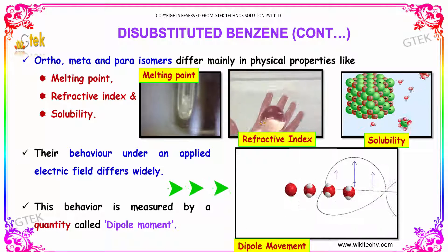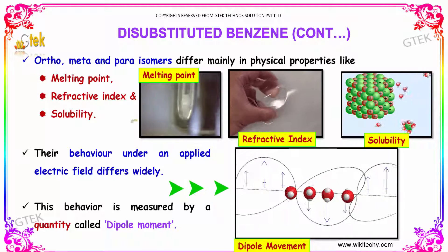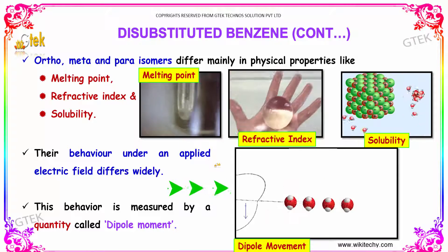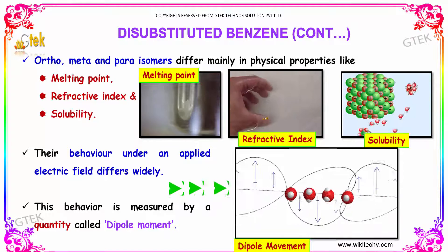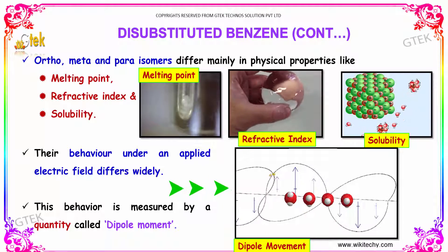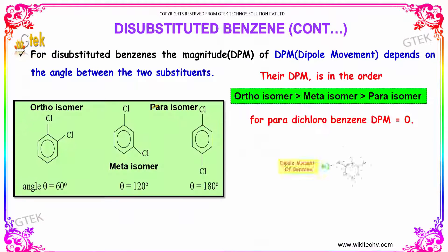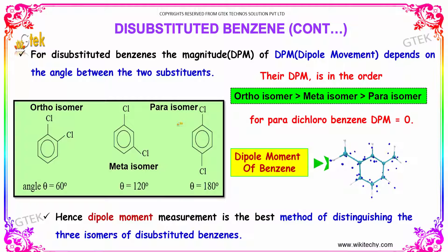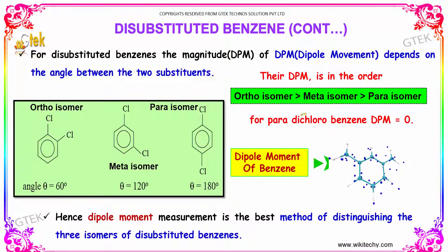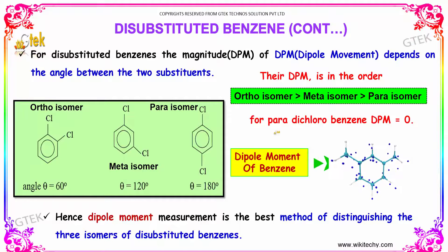The behavior under an applied electric field differs widely among the isomers. This behavior is often measured in terms of the quantity named dipole moment. For disubstituted benzene, the magnitude of dipole moment depends upon the angle between the two substituents. For example, the ortho isomer has a greater dipole moment than the meta isomer, which is greater than the para isomer. Hence, dipole moment measurement is the best method of distinguishing the three isomers of substituted benzene.